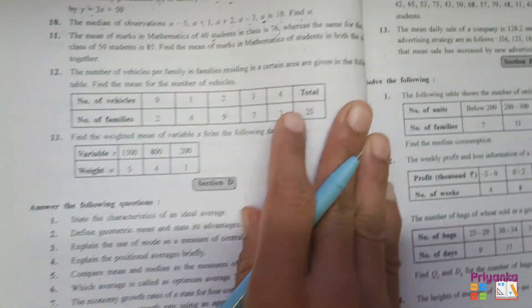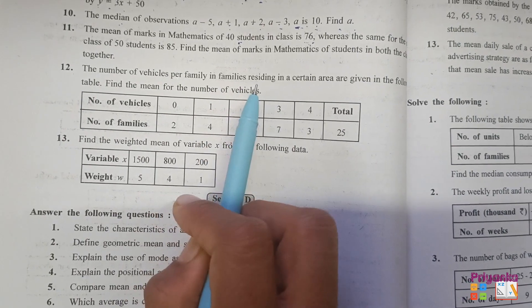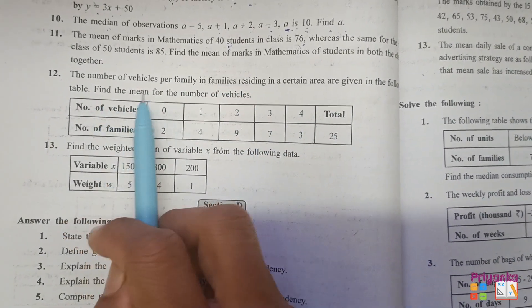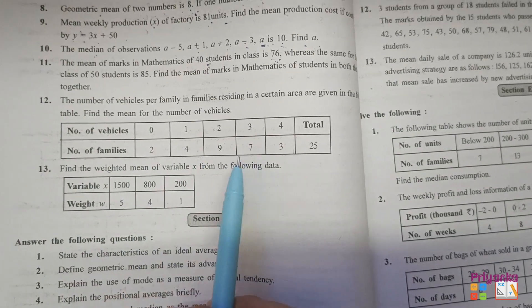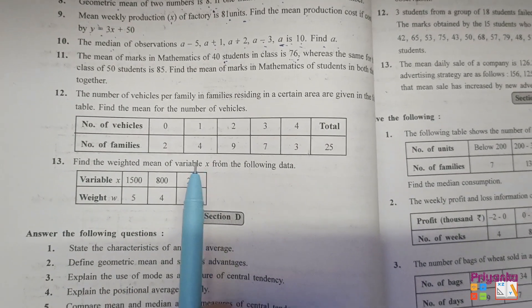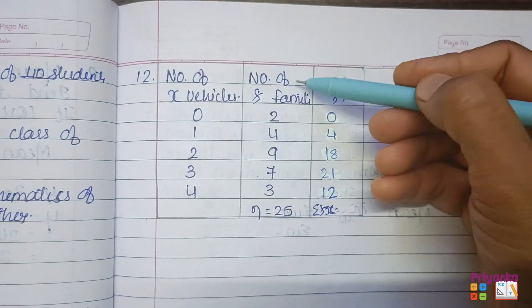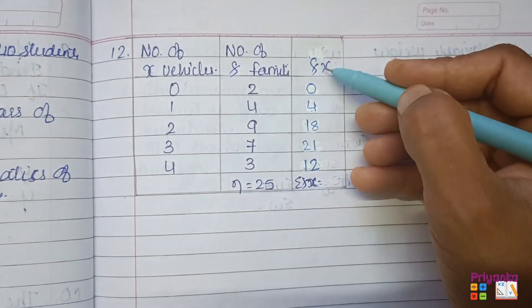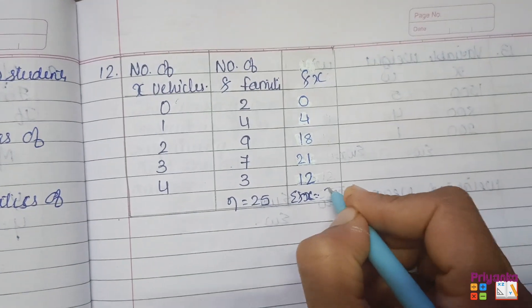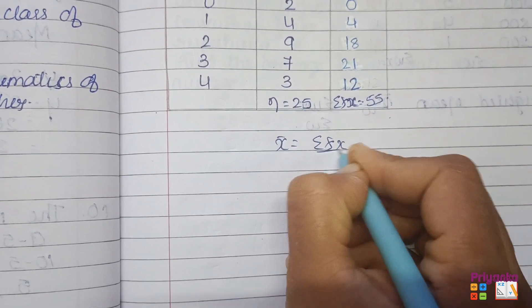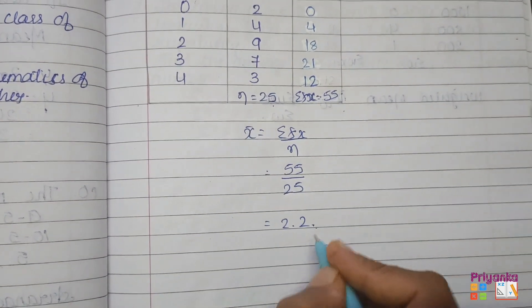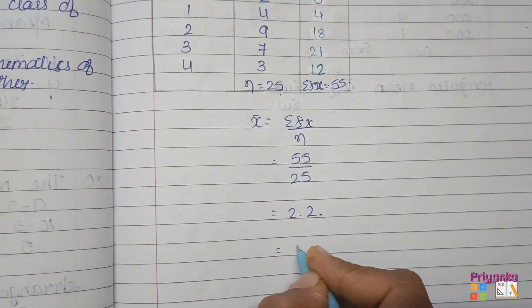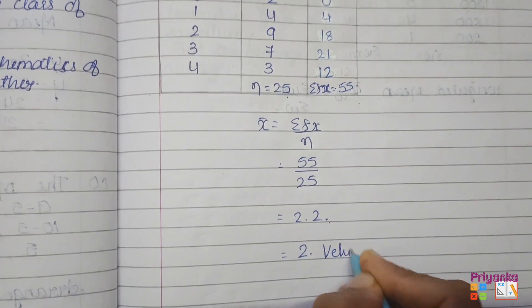Question number 12. The number of vehicles per family in families resident in a certain area are given in the following table. Find the mean for the number of vehicles. As you can see, the information is given in discrete data. We will first find out mean. Here I took the x and the frequency which is given in the question. The multiplication of these two will get fx, and the total is sigma fx. Here I am using direct method to find out mean. Formula for the direct method is sigma fx upon n. 55 divided by 25, you will get answer 2.2. So here the value is less than 5, so we can say it's 2 vehicles which has been asked in the question.